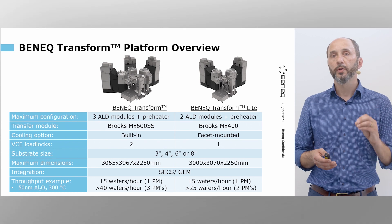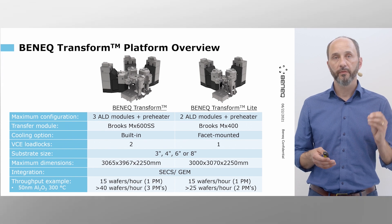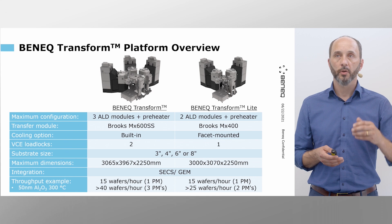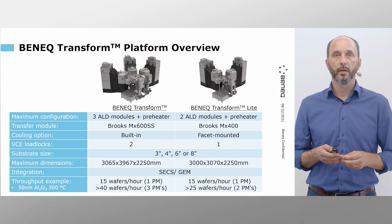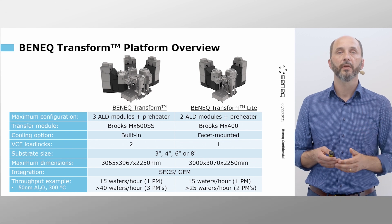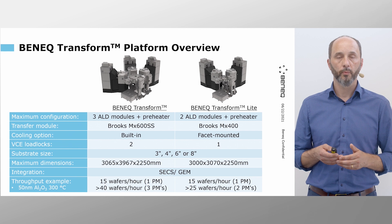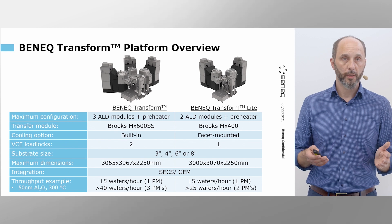Both platforms can handle wafer sizes from three inch all the way to eight inch and have SECS/GEM communication capability. As a reference point, for 15 nanometer aluminum oxide, a thermal batch process module is able to generate 15 wafers per hour throughput from just one process chain.